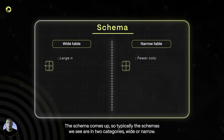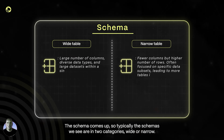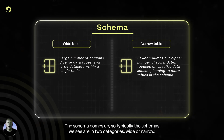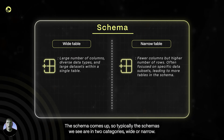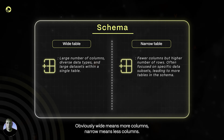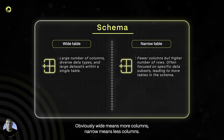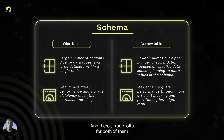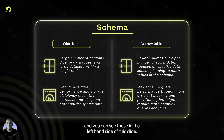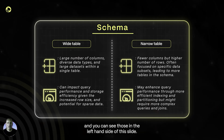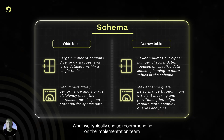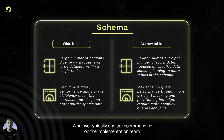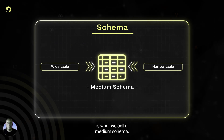Typically the schemas we see are in two categories: wide or narrow. Wide means more columns, narrow means less columns, and there are trade-offs for both — you can see those on the left-hand side of this slide. What we typically end up recommending on the implementation team is what we call a medium schema.